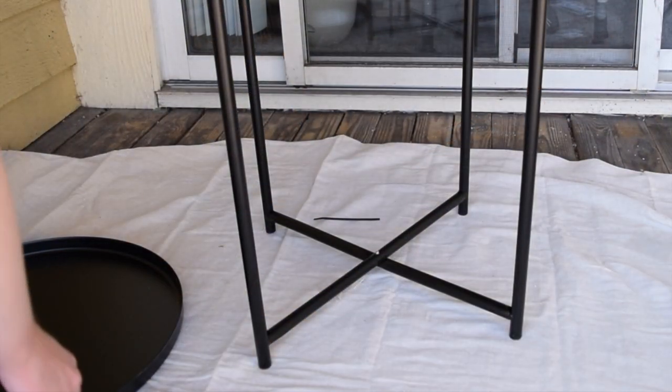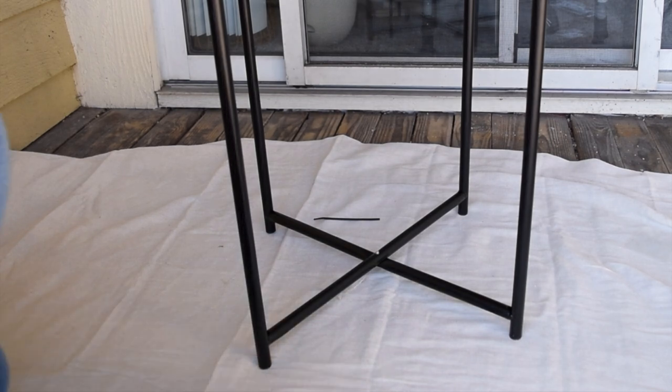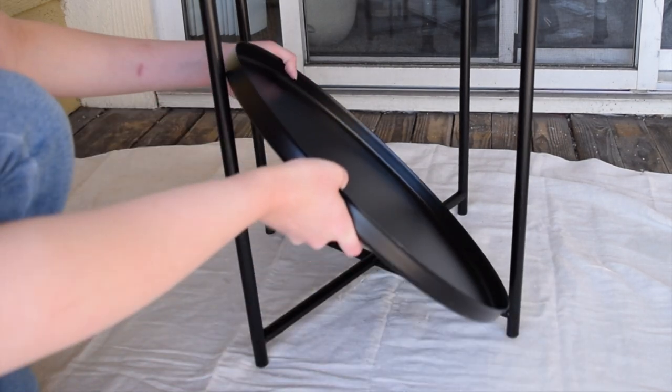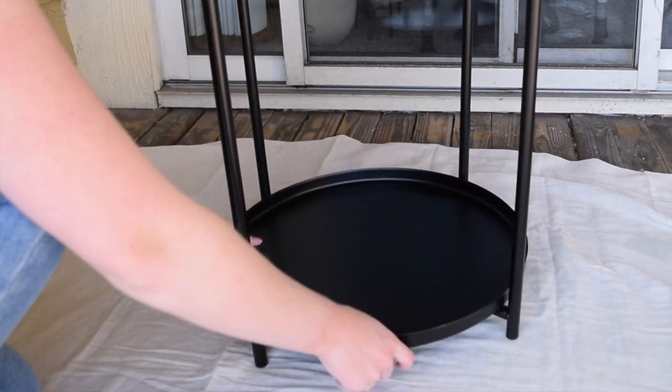And since I had that metal tray and the bottom of this table has the crossbars, I decided why not use that to turn this into a two-tiered table.